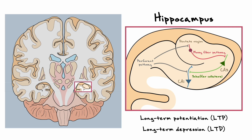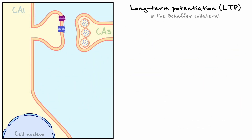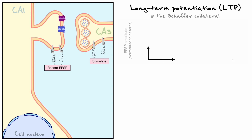For that, we will consider the Schaffer collateral synapse of the CA3 neurons onto the CA1 neurons. The synapse between CA3 and CA1 neurons is mediated by glutamate and is thus excitatory, and this connection is formed on the dendritic spines of the CA1 neurons. The basic setup for plasticity experiments is to electrically stimulate the presynaptic cell and to record the response from the postsynaptic cell. The EPSP measurements at the postsynaptic cell are then plotted across time.